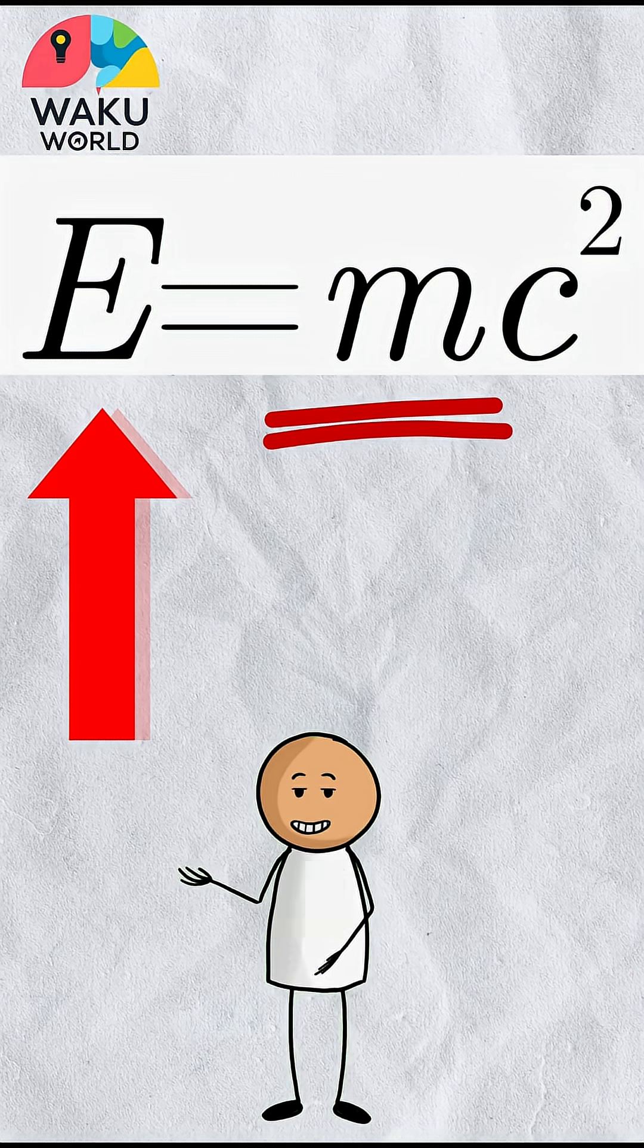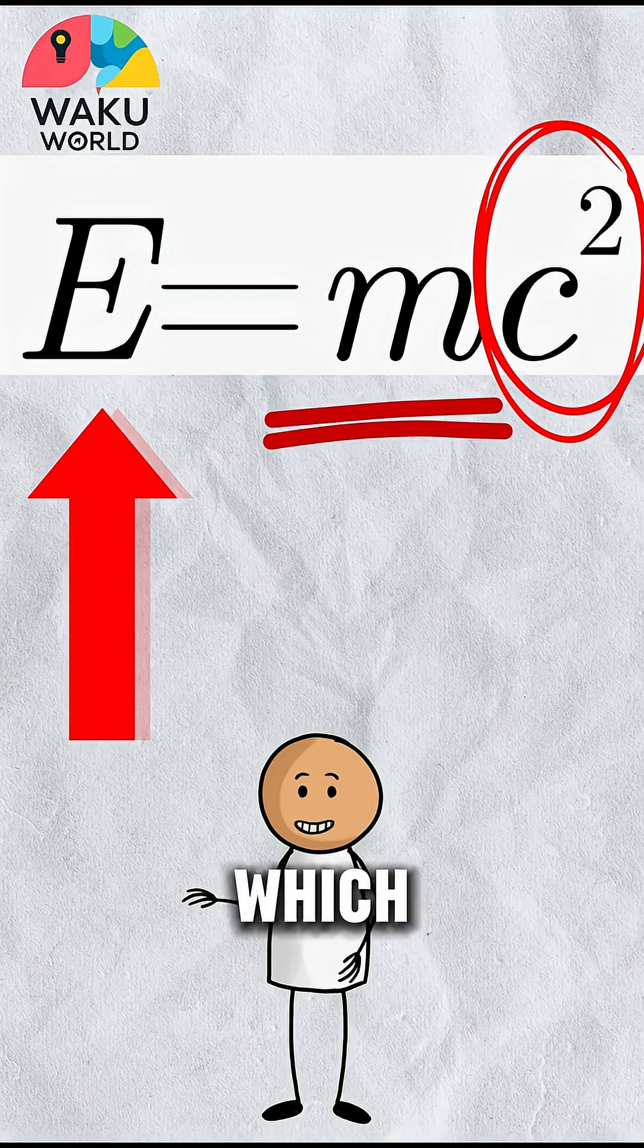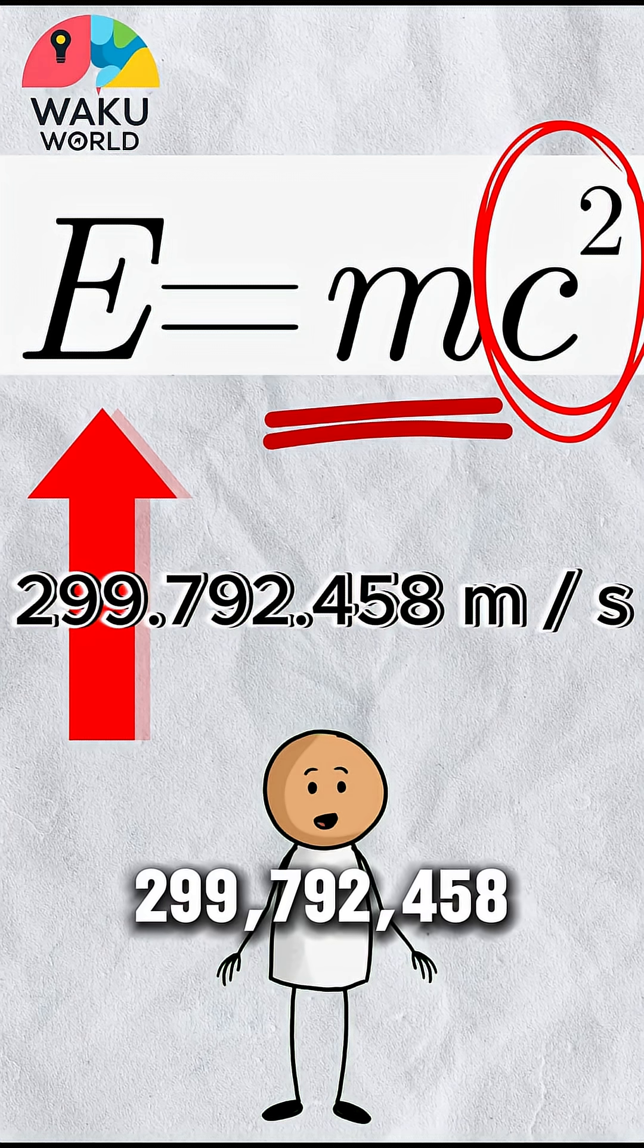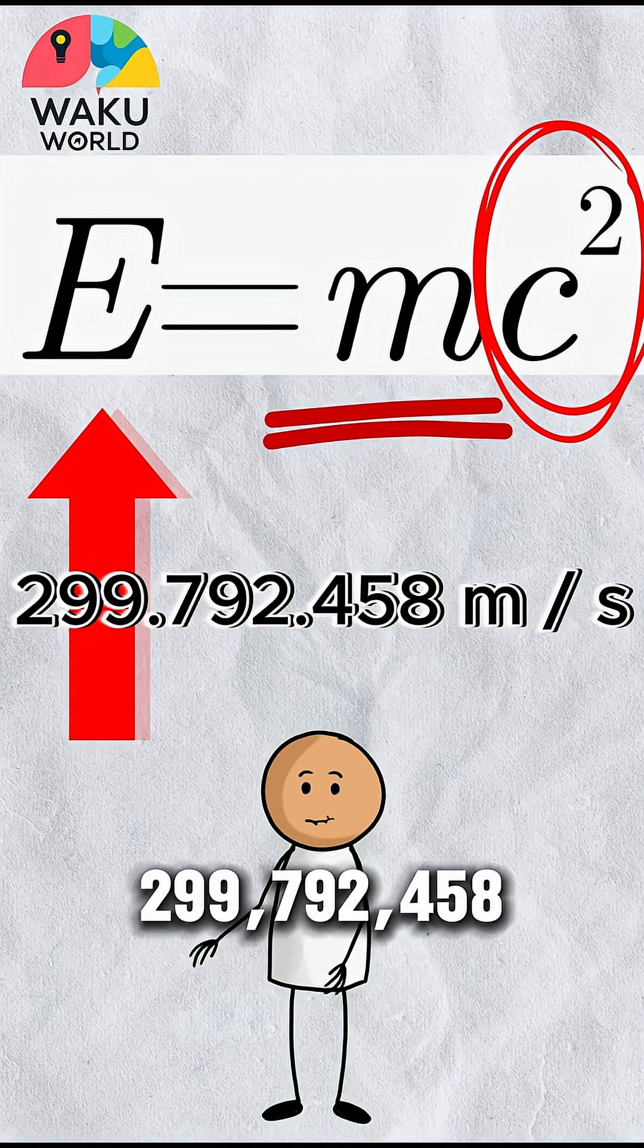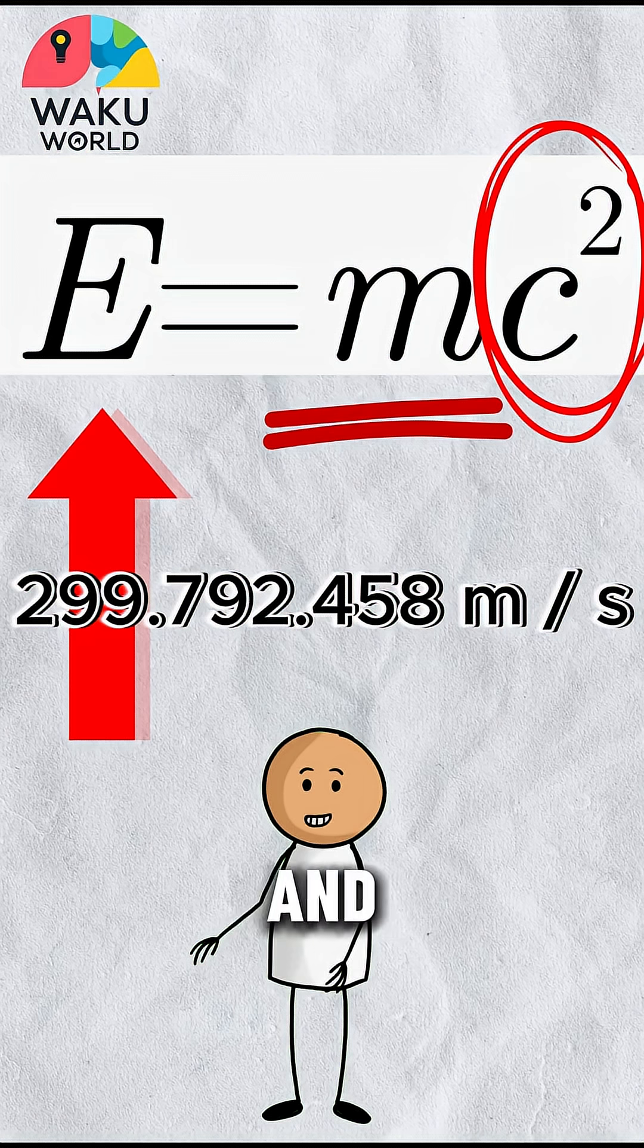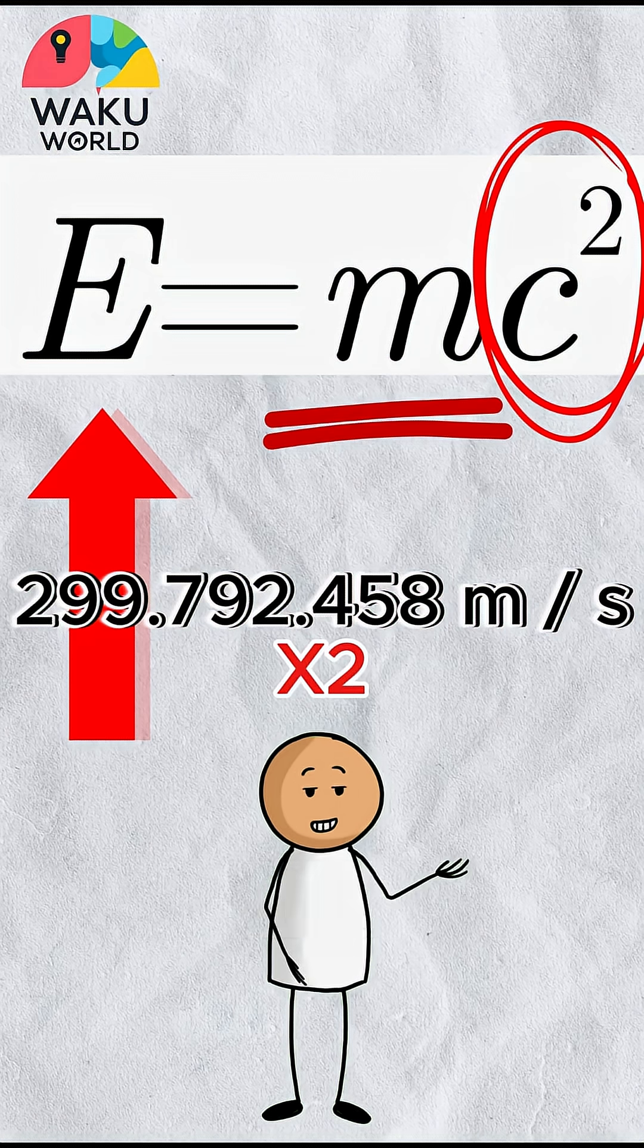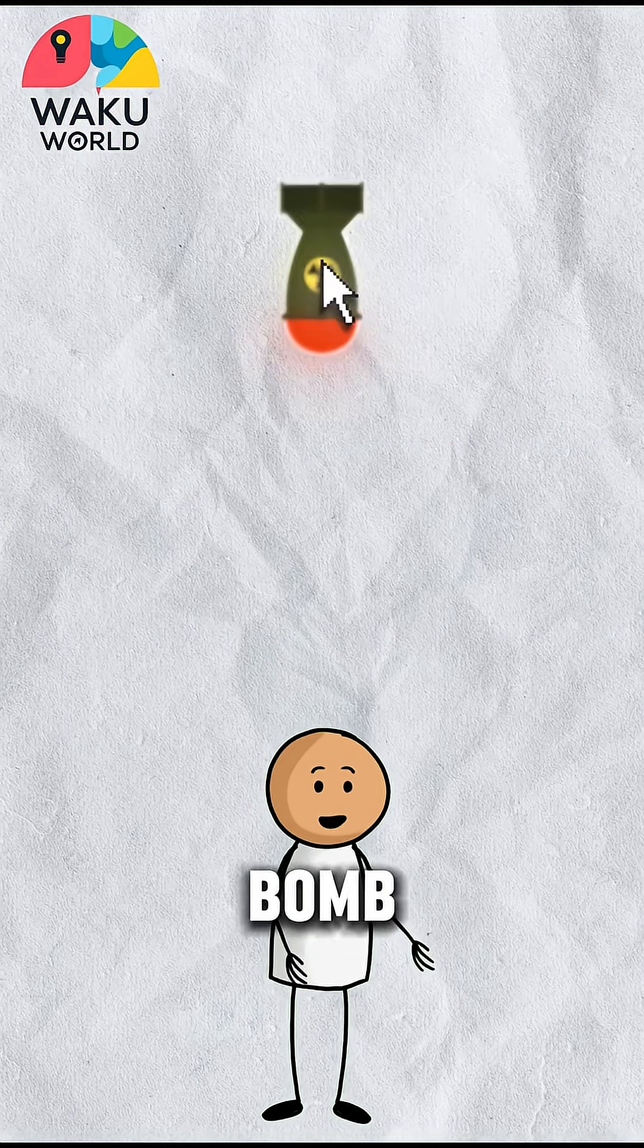Because C is the speed of light, which is 299,792,458 meters per second, and when you square it, the number gets gigantic. So when a nuclear bomb splits atoms, a small amount of their mass actually turns into a massive burst of energy.